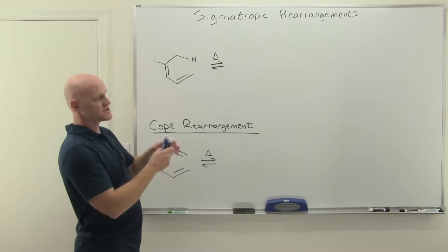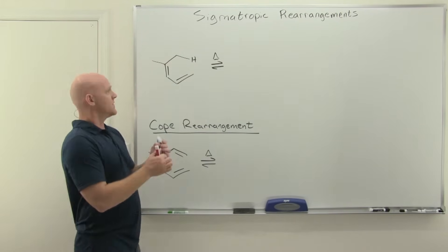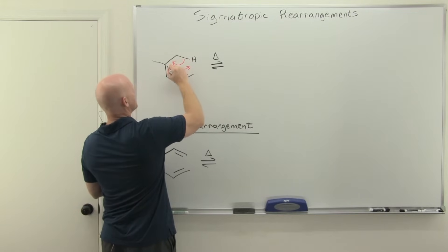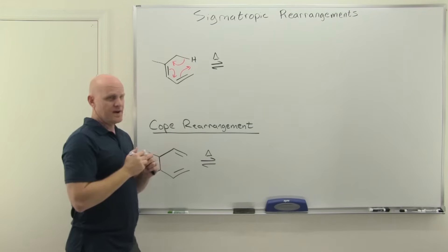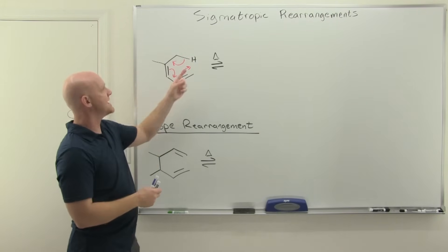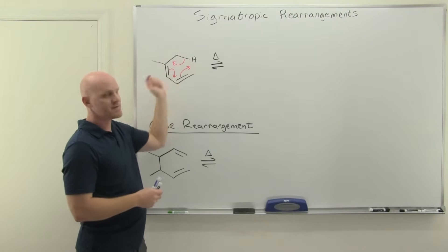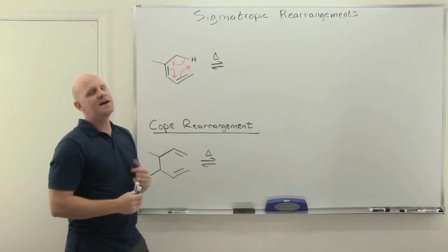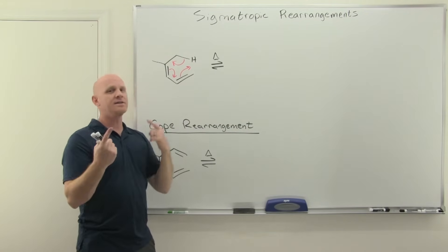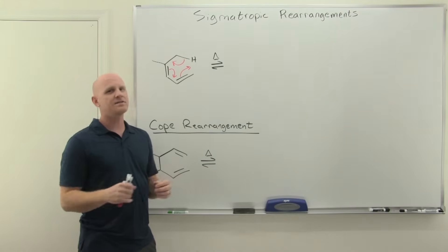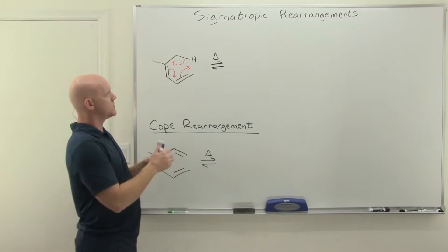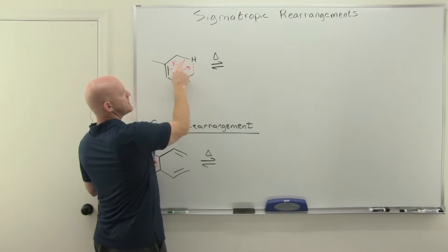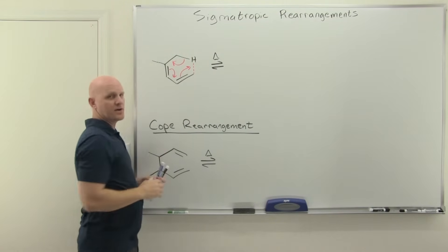Take a look at the motion of electrons in this one. We're going to have the cyclic movement of six electrons. By moving around in a ring like this, every atom in that six-membered system — a quasi-ring, if you will — is going to both be losing a bond and gaining a bond, so that we don't violate the octet rule. We are forming a new sigma bond right here, and then we're breaking a sigma bond right here.